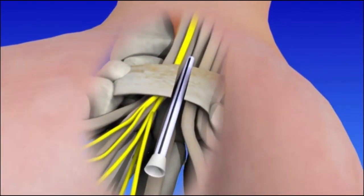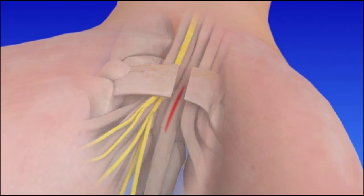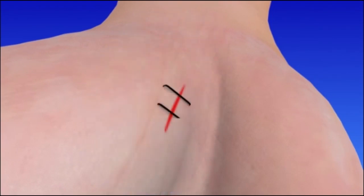The loose ends of the ligament separate to open the carpal tunnel and take pressure off the median nerve. Eventually, the gap between the two ends will fill in with scar tissue. The incision is then closed with stitches.